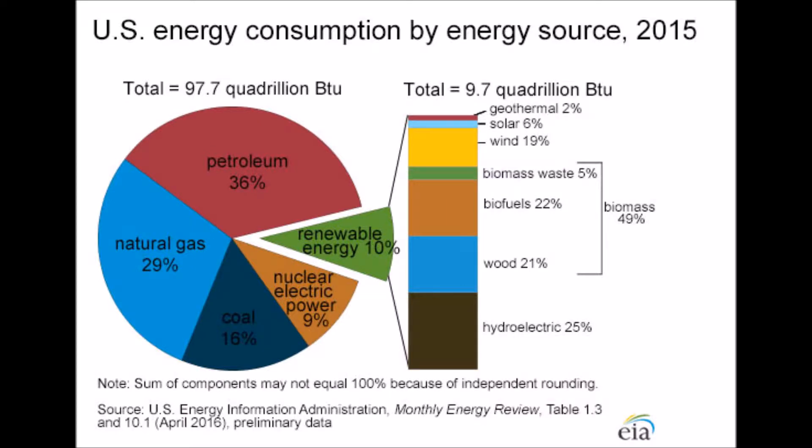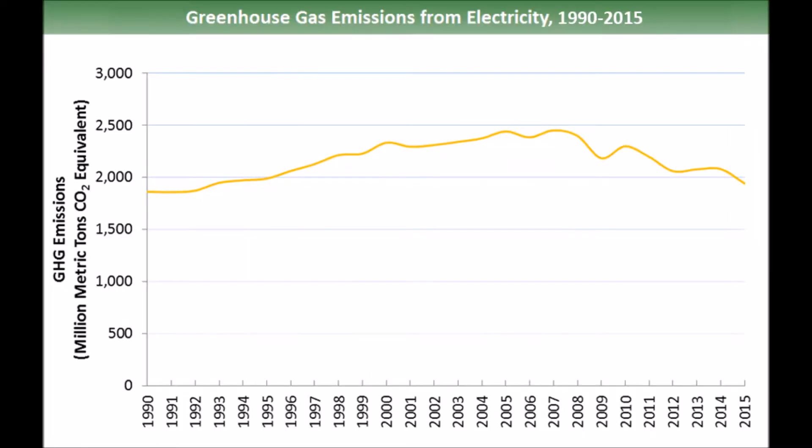Fossil fuels take millions of years to form and will eventually be depleted. Electricity generation made up 30% of total U.S. greenhouse gas emissions in 2014. The burning of fossil fuels like coal, oil, and natural gas releases massive amounts of CO2 into the atmosphere, with 1.9 billion metric tons emitted by the United States in 2015.